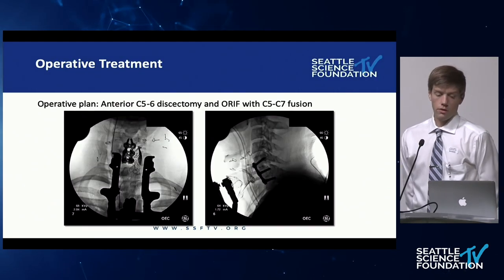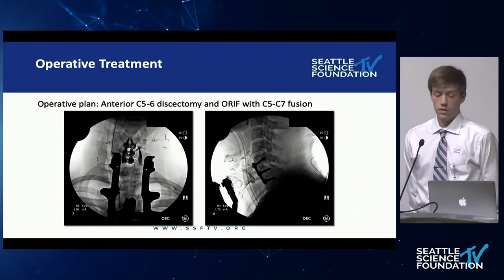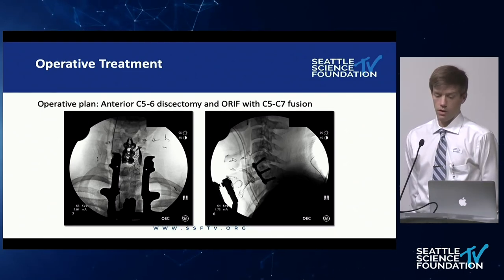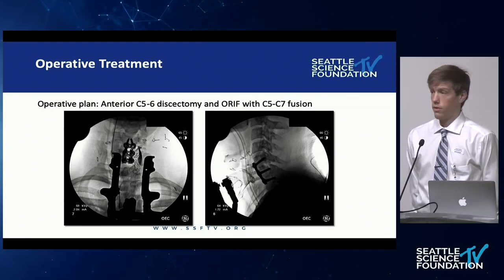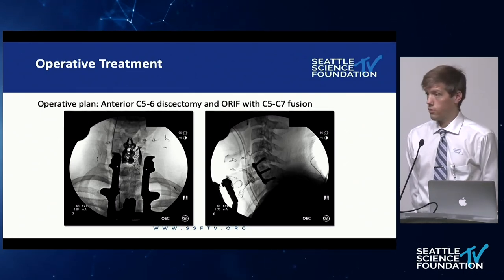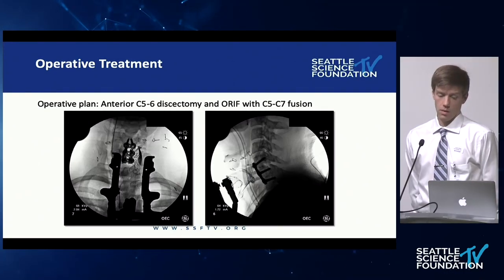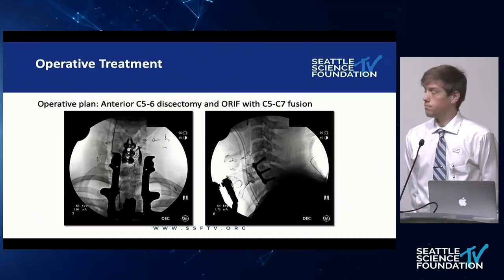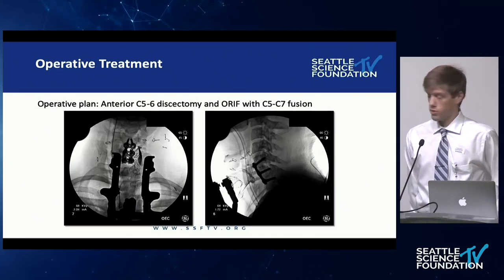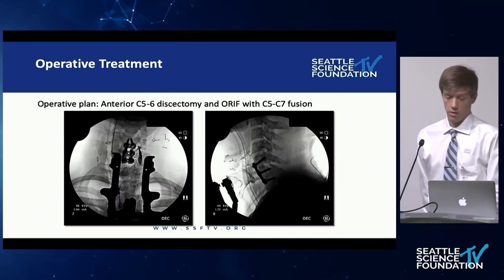This patient's operative plan was anterior C5-6 discectomy, open reduction internal fixation, with C5-C7 fusion. I've included the intraoperative fluoroscopy images here — an AP and a lateral. The procedure was without complication.